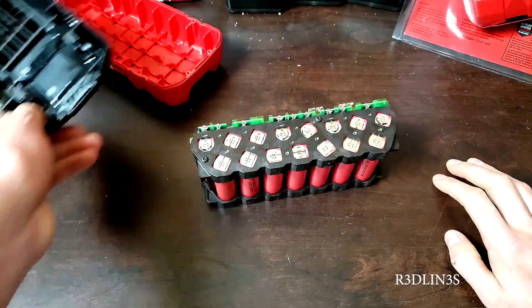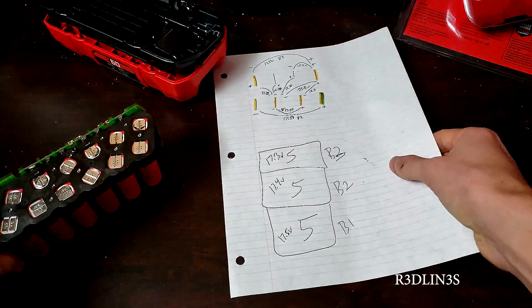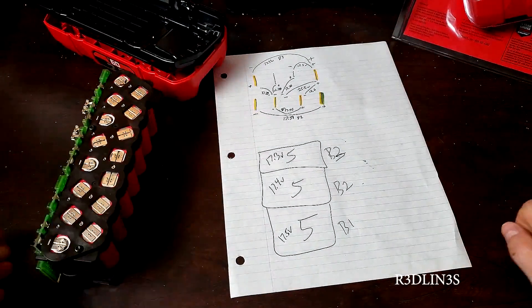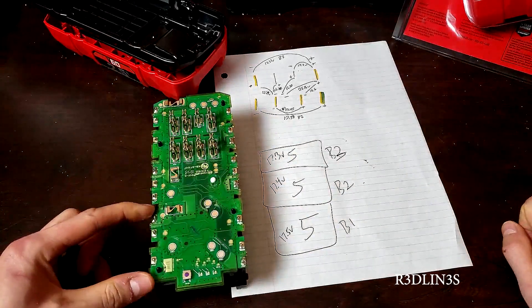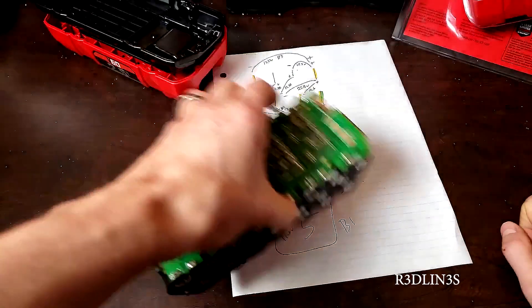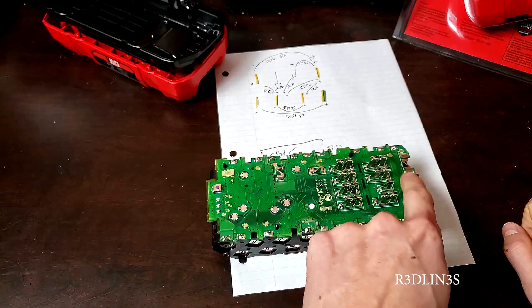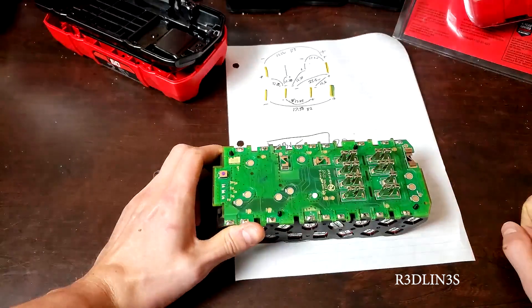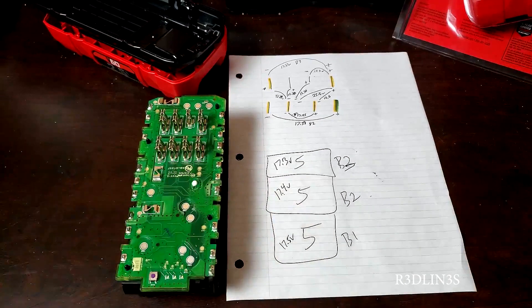I went ahead and did some science things. I mapped out what's going on here. We have three battery banks in one: five batteries here, five batteries here, and five batteries here. It's more apparent if you look, there's a fuse, a fuse, and another fuse. There would be no three fuses if this was all acting as one big battery.